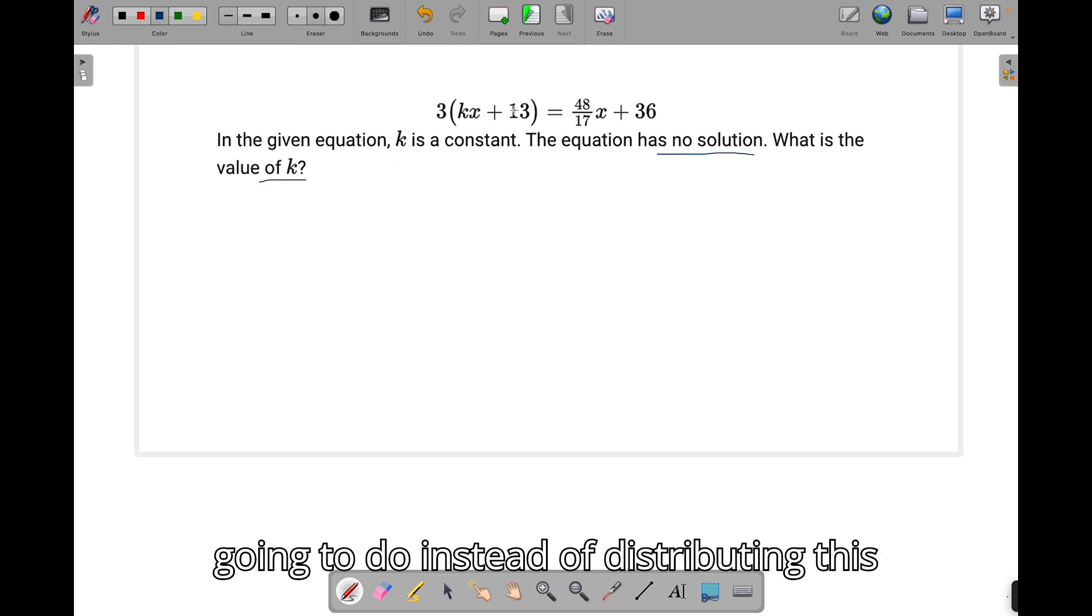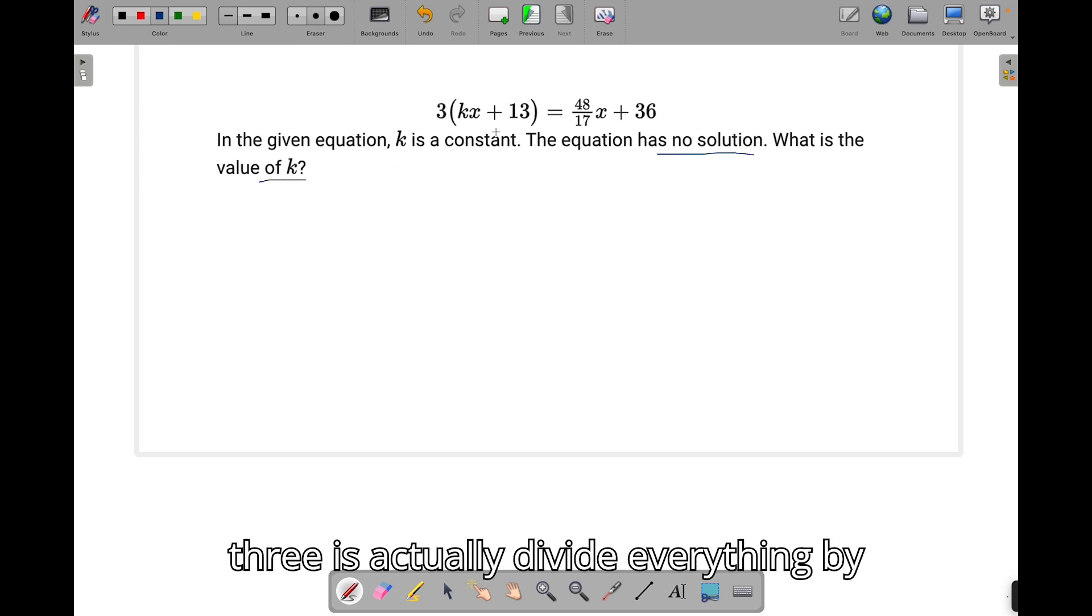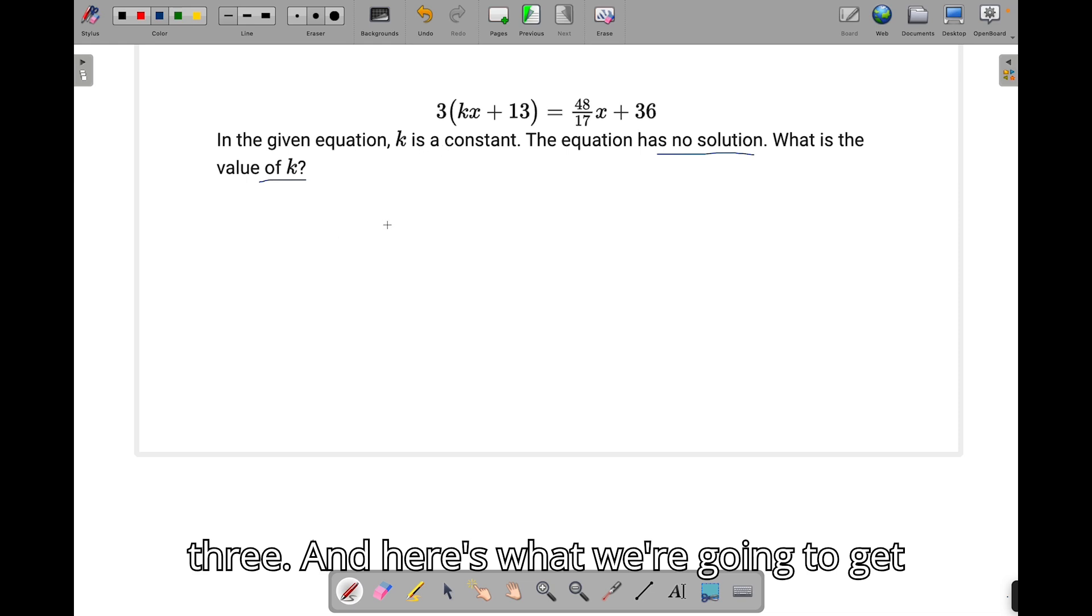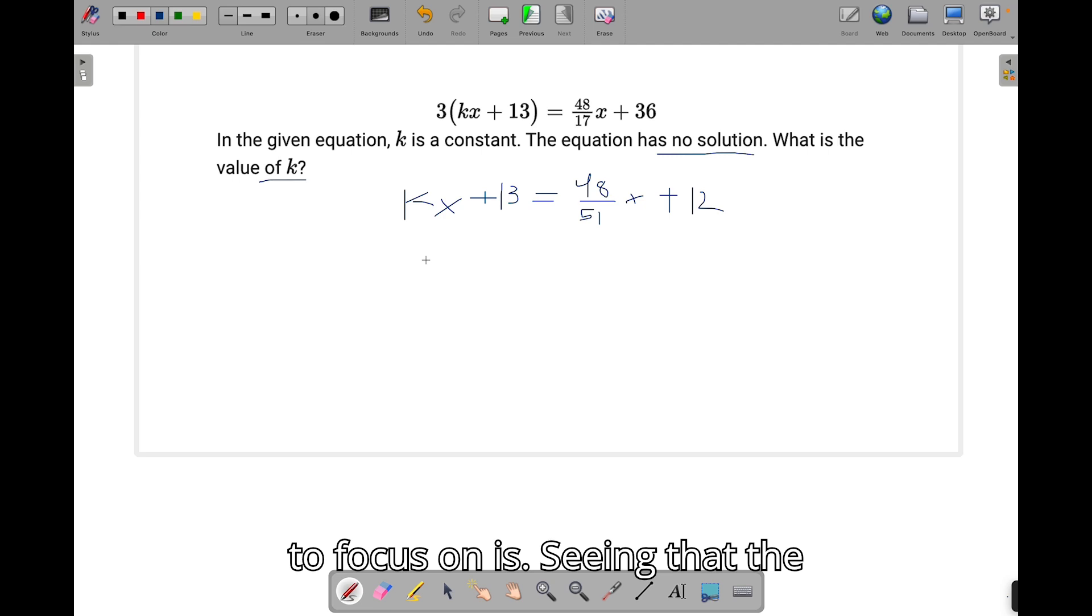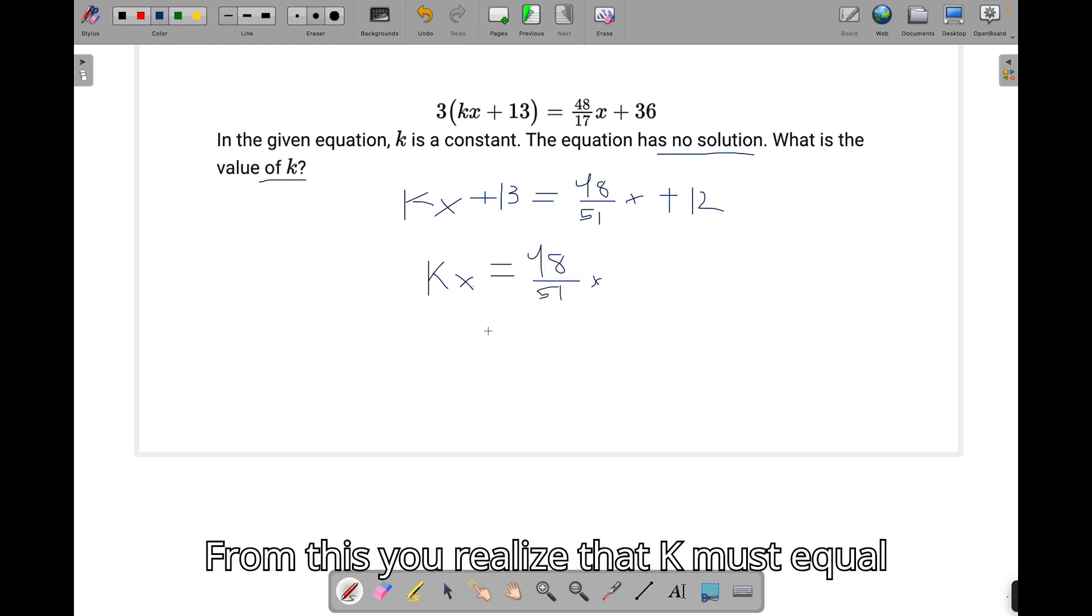What we're going to do instead of distributing this 3 is actually divide everything by 3. And here's what we're going to get when we do that. So once you get here, what we need to focus on is seeing that the 12 and the 13 don't really matter. We just need to focus on x. The x's need to cancel out. So you can then just set kx equals 48 over 51x.